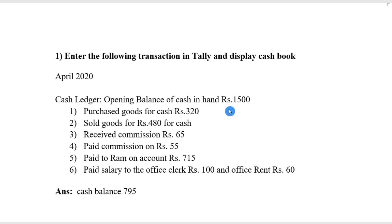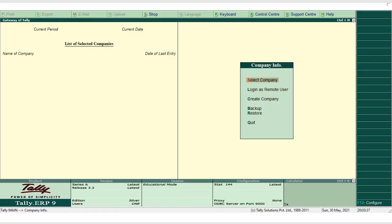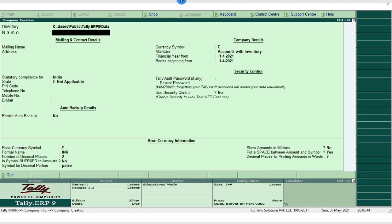After posting all the entries, our cash book cash balance will be 795. To work through this exercise, I'll create a company in Tally.